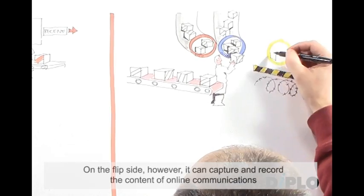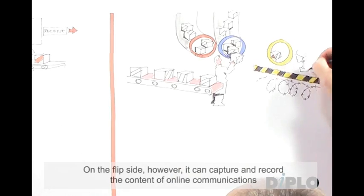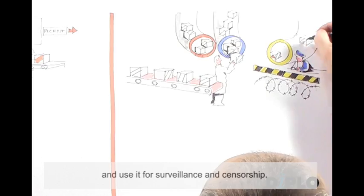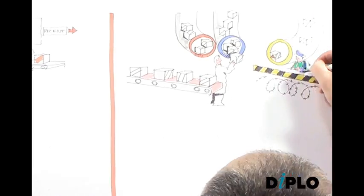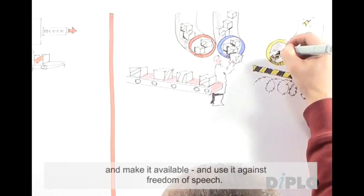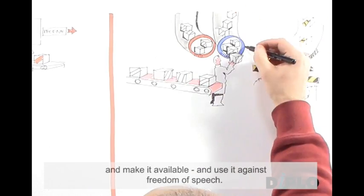On the flip side, however, it can capture and record the content of online communications and use it for surveillance and censorship. Governments can install DPI solutions or force telecom operators to install it and use it against freedom of speech.